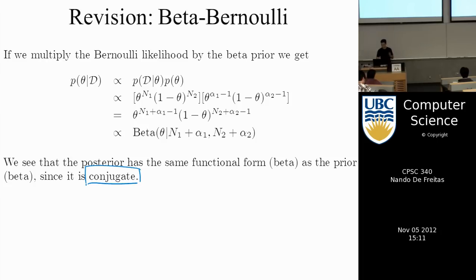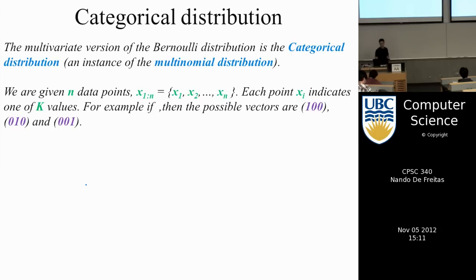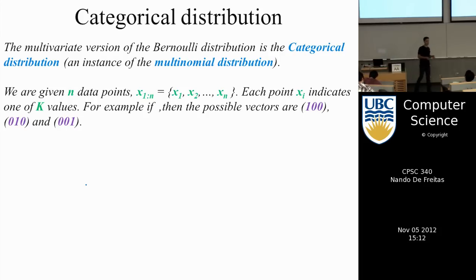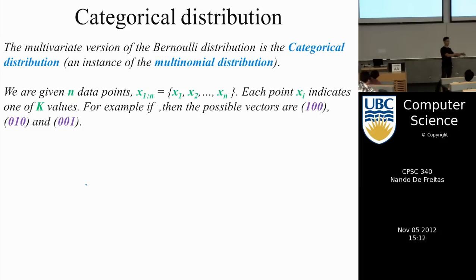The extension I want to talk about today is the extension of the Bernoulli distribution, which is going to be called the categorical distribution. I use the word categorical instead of multinomial because it's more natural — it's basically saying something is either of category x, or category y, or category z. So we're categorizing data.